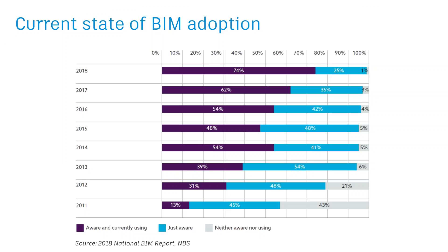Looking at the current state of BIM adoption in the AEC industry — this is a report from the NBS, one of the latest reports on adoption. About 75% are aware and using BIM on their projects, about 25% are aware but not using it, and really only about 1% don't know what building information modeling is. It is really becoming the golden standard for the construction and design industry, because there's so much efficiency in terms of cutting delivery times and saving money throughout the process.